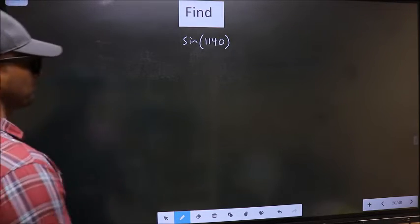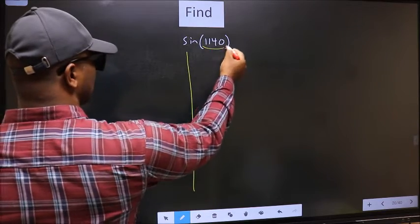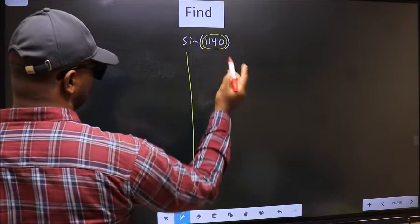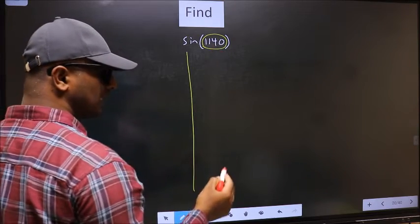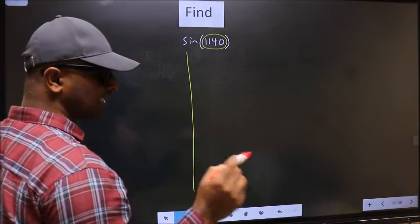See, here we have 1140. Now you should check 1140 lies between which two multiples of 180.